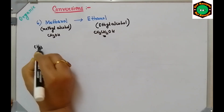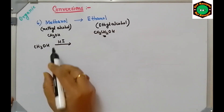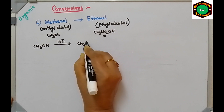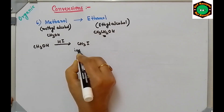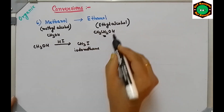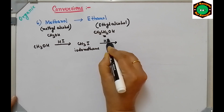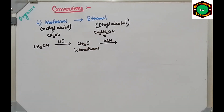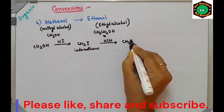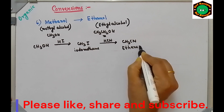Take methanol and treat it with HI. Water will be removed and you get CH3I (iodomethane). For stepping up, treat CH3I with potassium cyanide (KCN). Nucleophilic substitution takes place: I will be substituted by CN, giving CH3CN, which is called ethanenitrile.